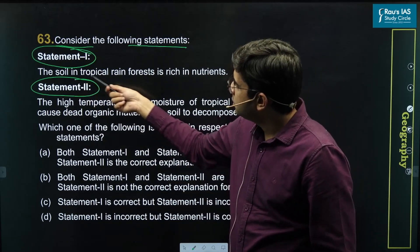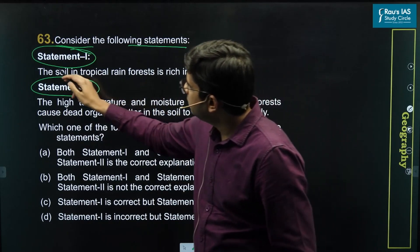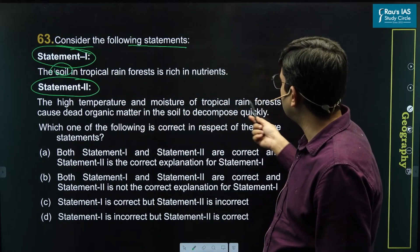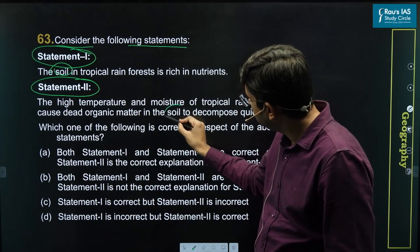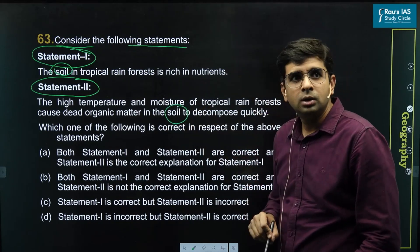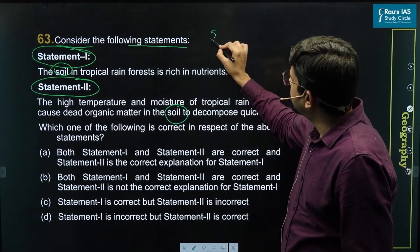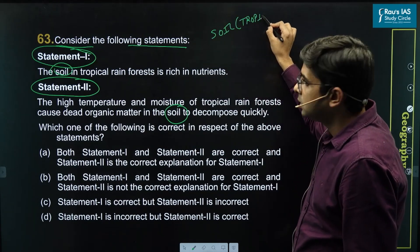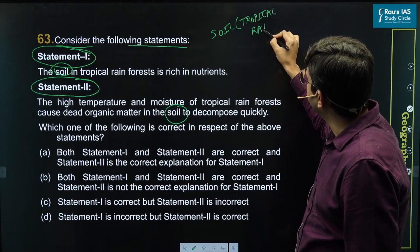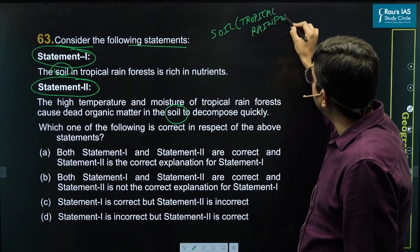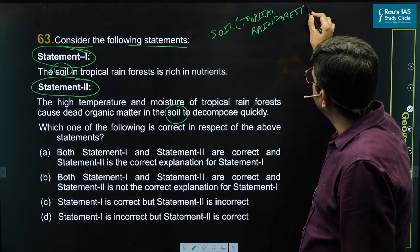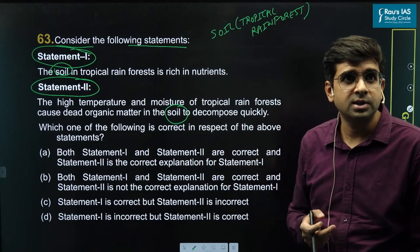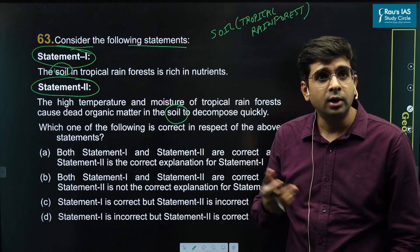Statement 1: Soil in tropical rainforest is rich in nutrients — the keyword is soil. Statement 2: High temperature and moisture of tropical rainforest causes dead organic matter in the soil to decompose quickly. The core topic is soils of the tropical rainforest region, examples of which include the Amazon forest, Amazon basin, Congo basin, Indonesia, and Malaysia region.